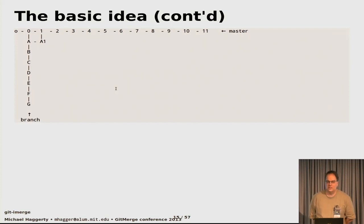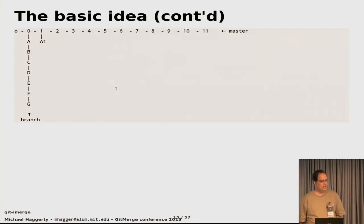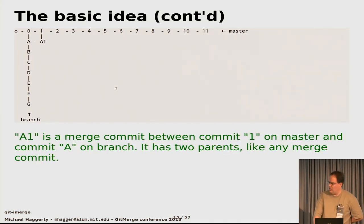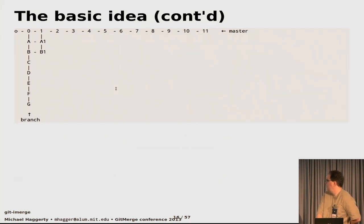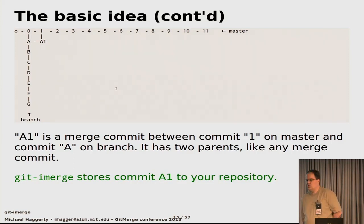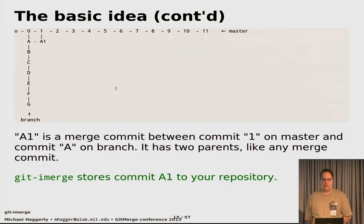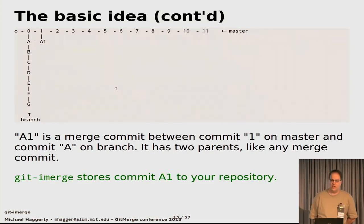This is a lot easier — there are fewer changes, and you've got a log message for each of those two commits. You can look at the log messages, see what those commits were trying to do, and bring them together. In fact, it's pretty likely there won't even be a conflict and Git can do it automatically. At that point, you can store that merge commit into your repository with two parents. You tell Git you've done this merge between commit 1 and commit A, here's the result, and Git stores it with two parents — 1 and A — giving a true picture of what's been accomplished so far.